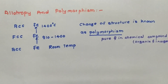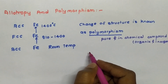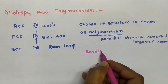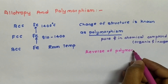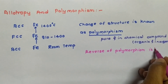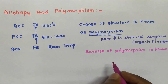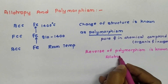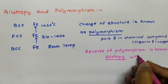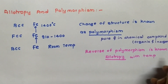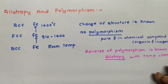The polymorphism of metals is frequently called allotropy, and the transformation is reversible. The reverse of polymorphism is known as allotropy, and transformation is reversible with change in temperature at a given pressure.